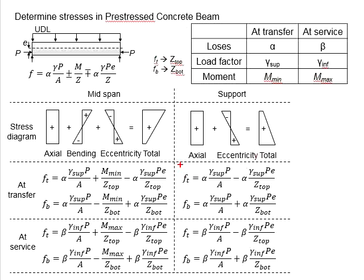Same goes to the equations for the support. As for the service state, the beta, gamma inferior, and moment maximum is being used. Again, the beta and gamma inferior will always go with the P. And for P here, the moment maximum will be adopted.